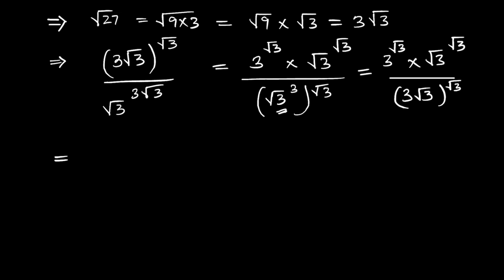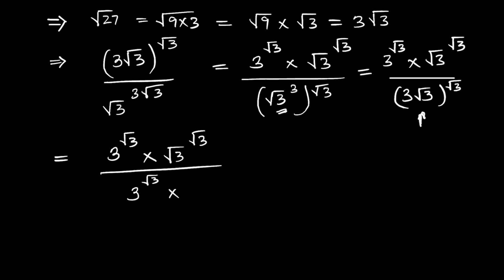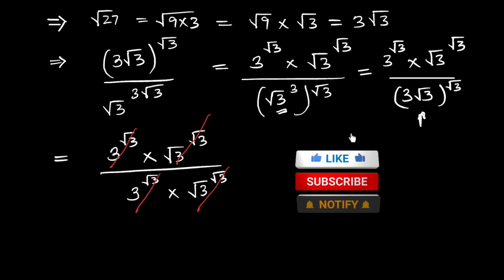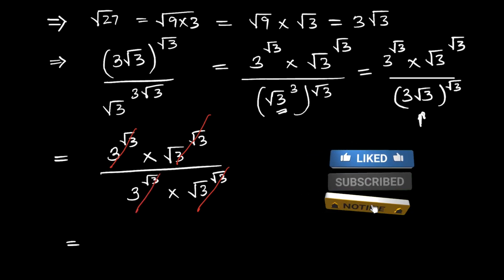Expanding further, the numerator is 3 raised to the power of root 3 times root 3 raised to the power of root 3. Splitting the denominator brackets similarly gives 3 raised to the power of root 3 times root 3 raised to the power of root 3. By inspection, the numerator and denominator cancel completely, giving us our final answer of 1.